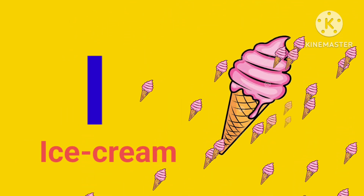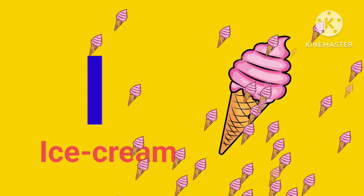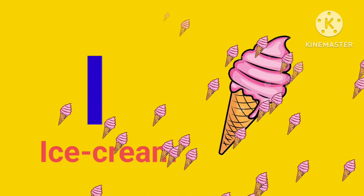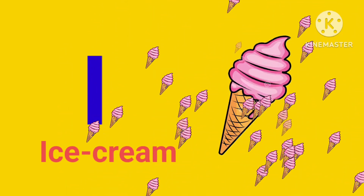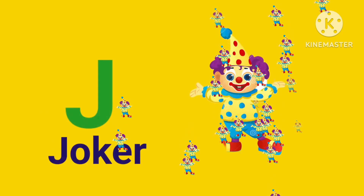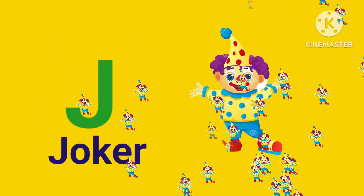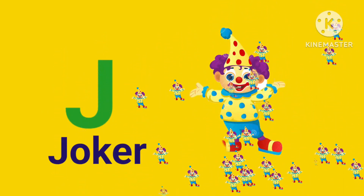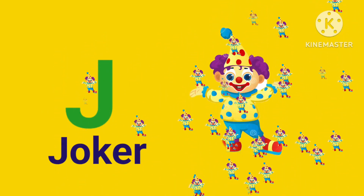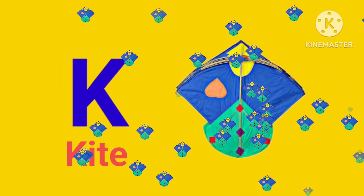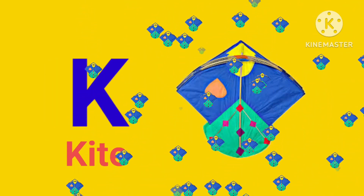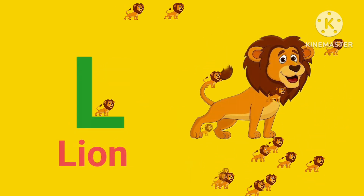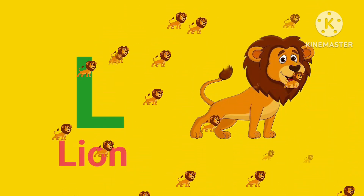I for ice cream. J for joker. K for kite. L for lion.